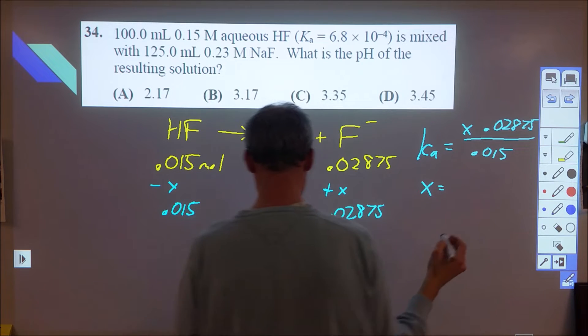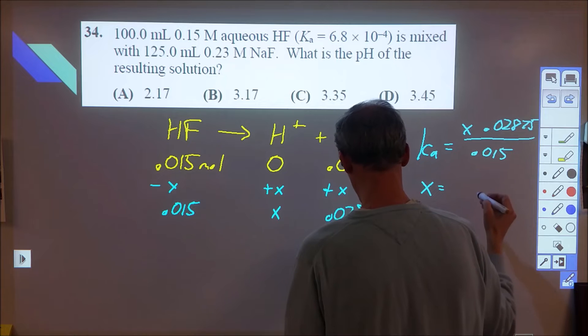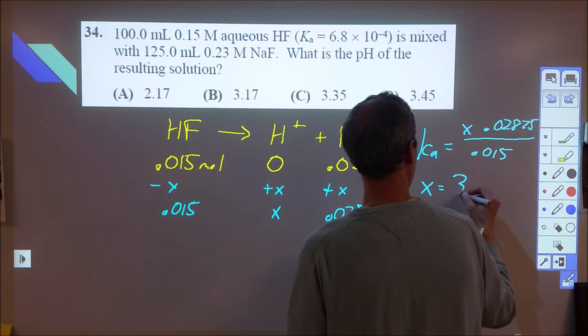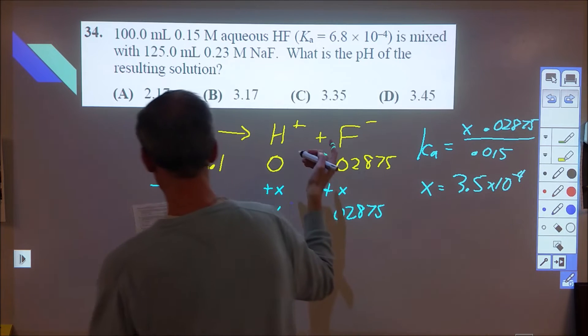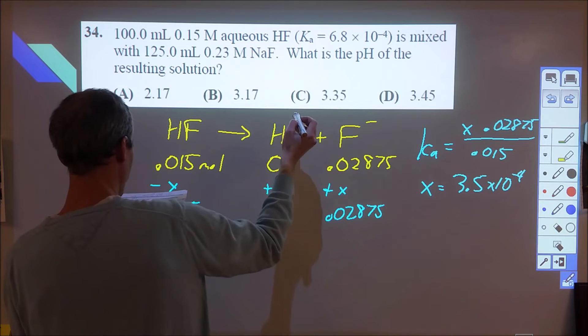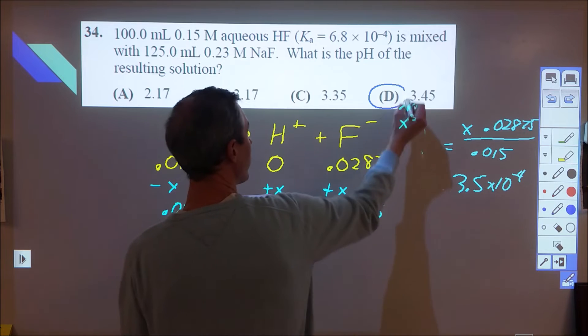And when I solve for that x, I get 3.5 times 10 to the negative 4th, and that ends up taking a negative log to be 3.45, which is D.